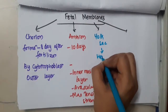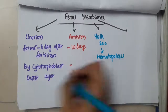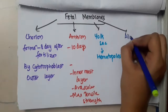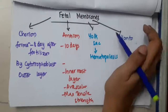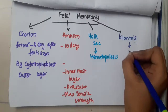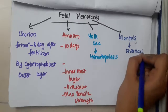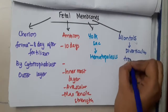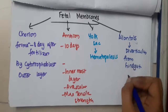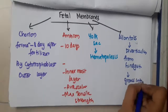Next, the yolk sac — hematopoiesis occurs in the yolk sac. Then we have allantois. Allantois is a diverticulum from the hindgut, and it slowly grows into the connecting stalk.